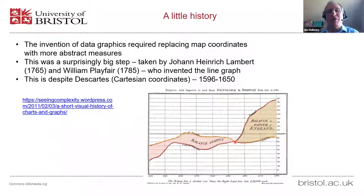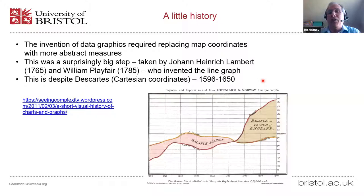A little history: the invention of data graphics required replacing map coordinates with more abstract measures. William Playfair invented the line graph in 1785. His graph shows imports (yellow line) and exports (red line) for the UK's trade with Denmark and Norway from 1700 to 1780, shaded to show negative and positive balance of payments — with the crossover point in the mid-1750s, aligned with the start of the Industrial Revolution.